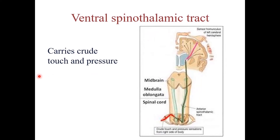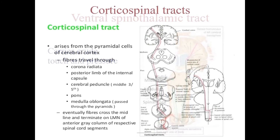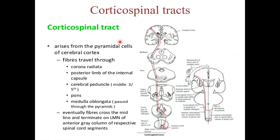The anterior spinothalamic tract is also an ascending tract responsible for crude touch. Regarding the corticospinal tracts, there is a lateral and ventral corticospinal tract. The fibers representing the upper limbs lie more medially in the lateral spinothalamic tract, while those for the lower limbs lie more laterally.